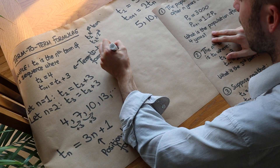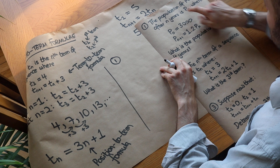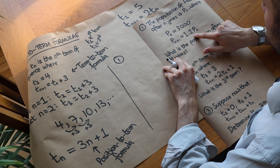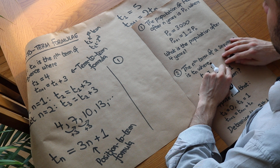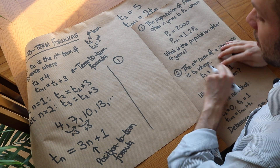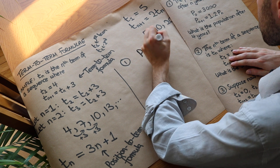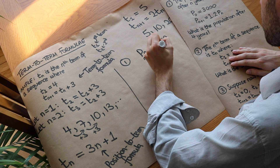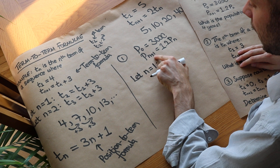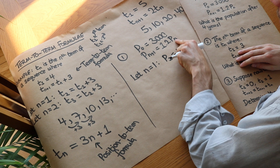Now let's do these examples. I saw an example just like this in one of the specimen papers for the new GCSE. The population of Flopland after n years is pn, where p0 is 3000 and pn+1 equals 1.2 pn. What is the population after 4 years? Since we want the population after 4 years, we want p4. Let's work through using different values of n. If we let n equal to 1, then p2 equals 1.2 times p1.